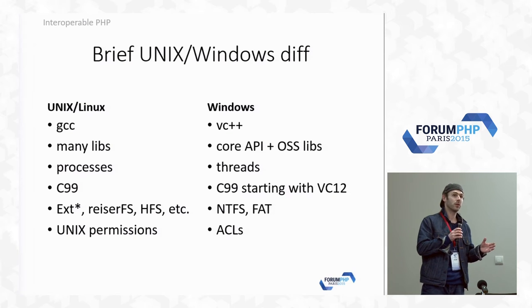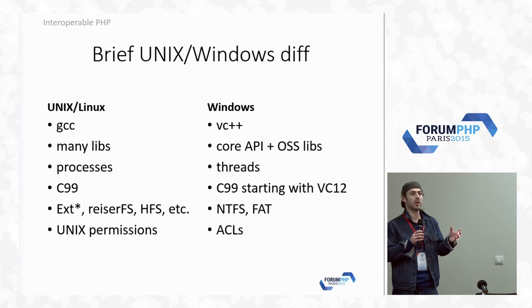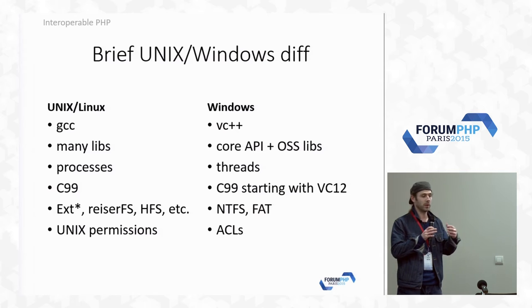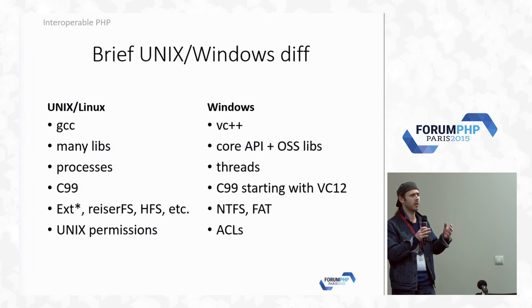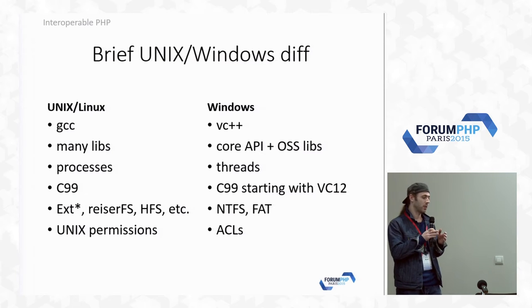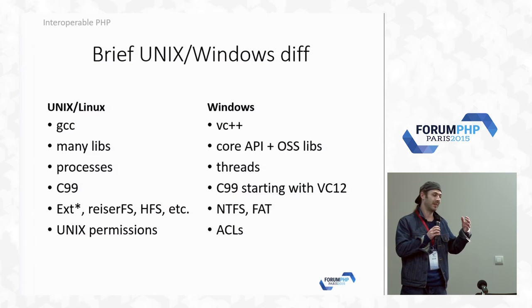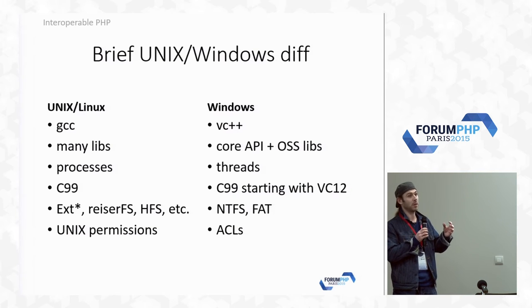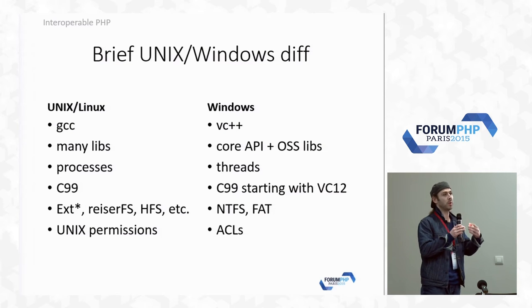On Unix and Linux the approach is to have many libraries with various functionality that communicate with the kernel via the standard C library — encapsulated pieces of functionality. It is the same on Windows, but we use many open source libraries to build PHP binaries for Windows. There is also the system API on Windows, which is not open source, and we have to use it in quite some situations to exploit the operating system functionality.